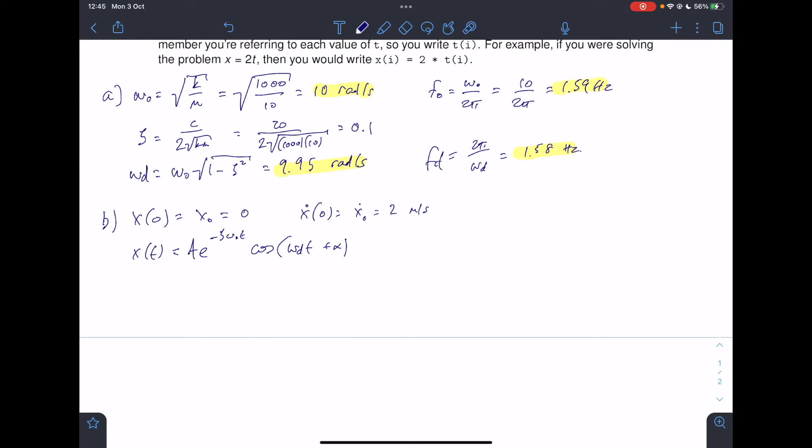Now if I apply the initial condition of t equals 0, so x is also 0, I've got A times e to the 0, which is 1, so that disappears. And then I've got cosine of omega d times 0, so I've just got cosine alpha. Now my initial condition is that equals 0.